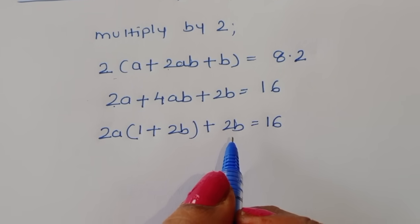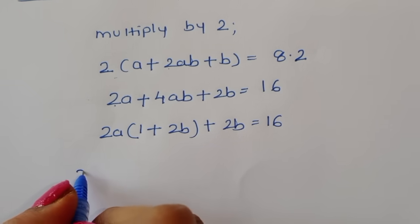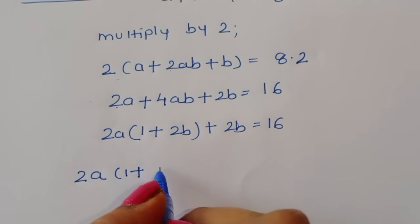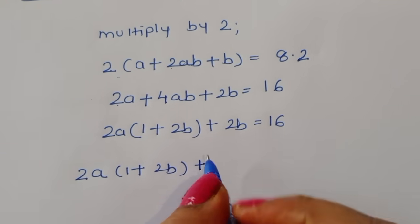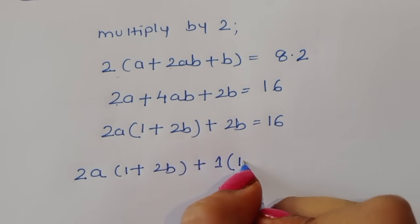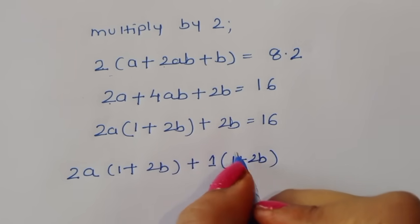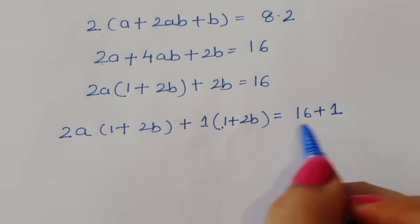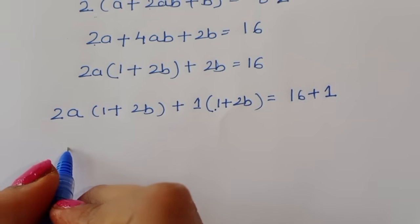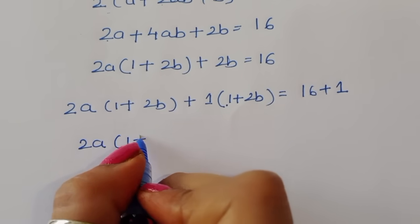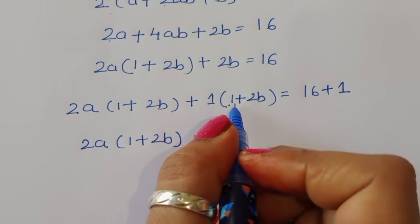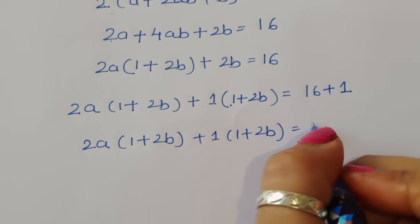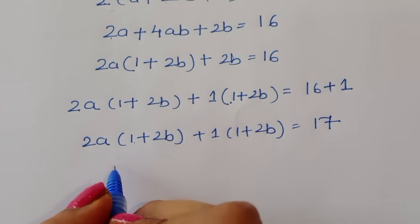We add 1 to both sides: 2a(1 + 2b) + 1·(1 + 2b) = 16 + 1. Now we can take (1 + 2b) as a common factor, giving us (1 + 2b)(2a + 1) = 17.